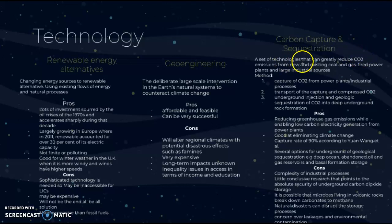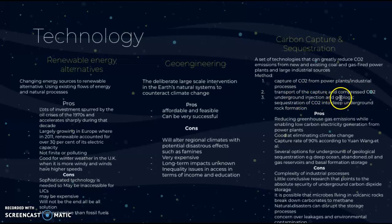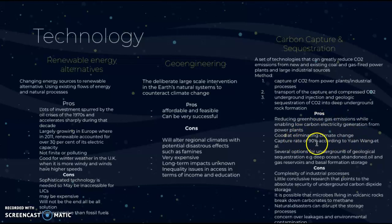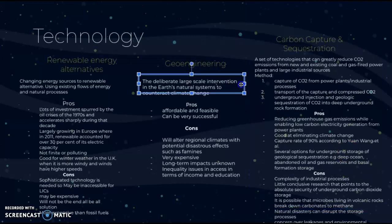Finally, carbon capture and sequestration is a set of technologies that can greatly reduce carbon dioxide emissions from new and existing coal and gas-fired power plants and large industrial sources. The method involves: capture of carbon dioxide from power plants and industrial processes; the captured carbon is then transported and compressed; and then injected underground into deep underground rock formations.